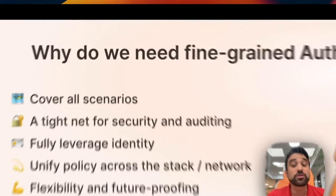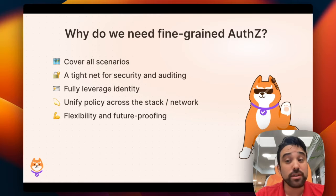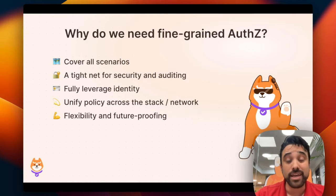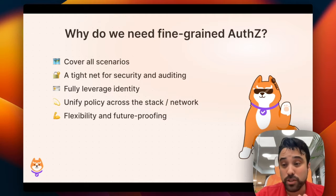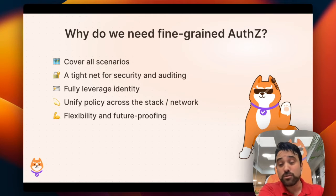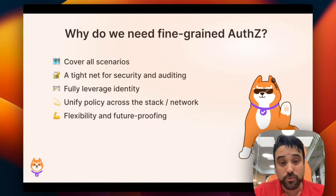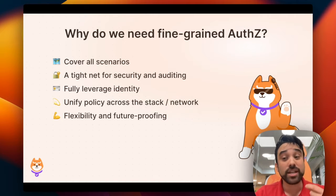Fine-grained authorization enables us to cover all the scenarios, all the different logic we're able to cover with our fine-grained authorization policy. It's a tight net that enables us to cover all our security vulnerabilities, all our sensitive points, and audit them and make sure we don't miss anything. It allows us to fully leverage identity — we're building complex identity providers and context claims and scopes for identity — and we need to be able to leverage them in a fine-grained fashion in our policy, in our authorization.